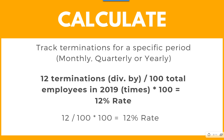The calculation is pretty straightforward. The first step is to determine the time period. For our example, we will calculate an annual turnover rate for a company of about 100 employees. So you take 12 divided by 100, multiply that by 100, and you get a 12% rate.